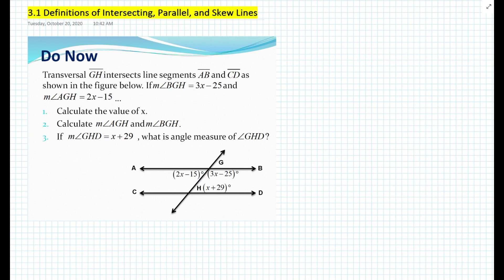Transversal line GH intersects line segments AB and CD as shown in the figure below. The measure of angle BGH is equal to 3x minus 25, and the measure of angle AGH is equal to 2x minus 15. Number one: calculate the value of x. Number two: calculate the measure of angle AGH and angle BGH. Number three: if the measure of angle GHD is equal to x plus 29, what is the angle measure of angle GHD?